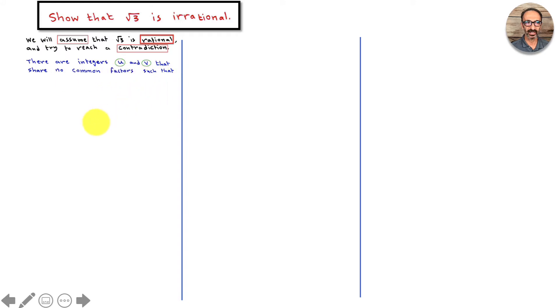There are integers u and v that share no common factors such that square root of three is u over v, where u and v are relatively prime. So we're assuming it's rational, but we want to take advantage that they are relatively prime.